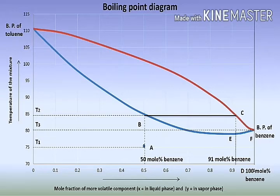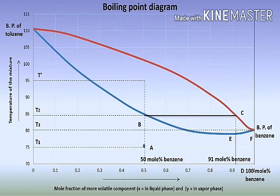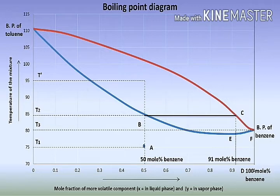In this way, we can get liquid containing almost 100 mol% of benzene. If we further heat the liquid represented by point B, the boiling point of the liquid increases from T2 degrees Celsius to temperature T' degrees Celsius. This happens due to the majority of the more volatile component being removed by vaporization. At this temperature, we get the liquid phase composition represented by point L and vapour phase composition represented by point N.